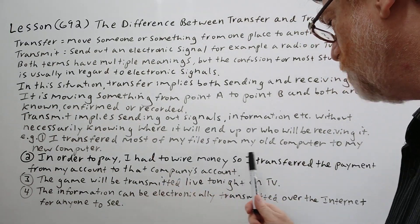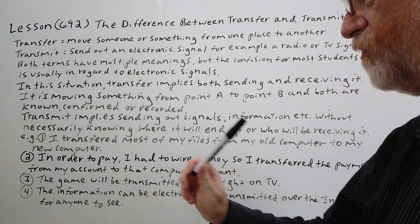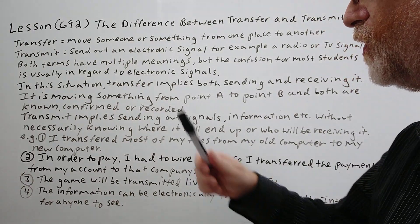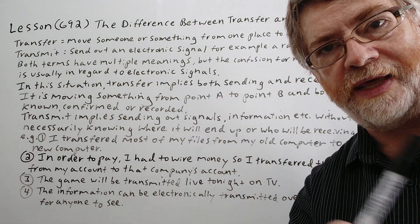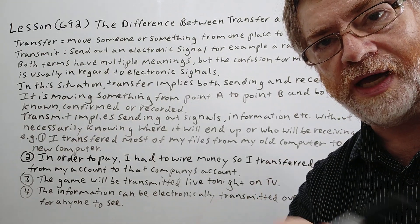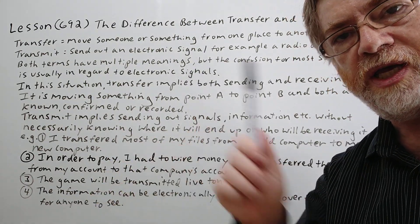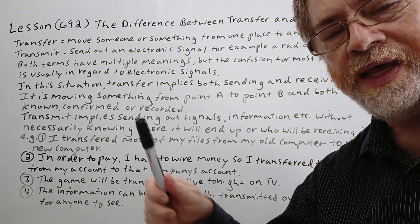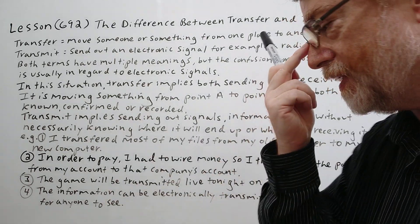Number two. In order to pay, I had to wire money, so I transferred payment from my account to that company's account. Again, both are known. They're recorded, they're confirmed. You sent money from your account to the other person's account. You would use transfer. You wouldn't use transmit in that sense, even though it is done electronically.